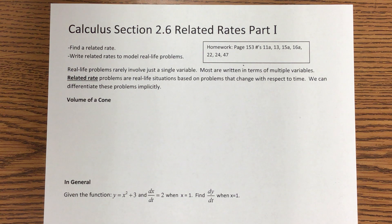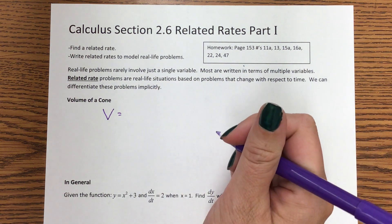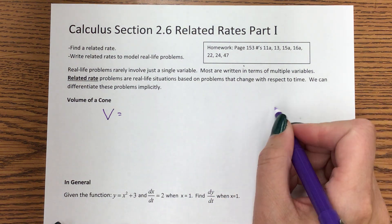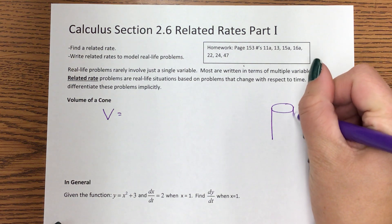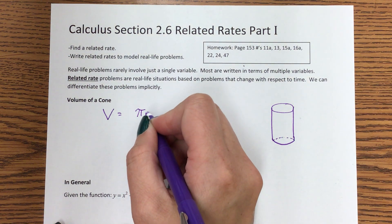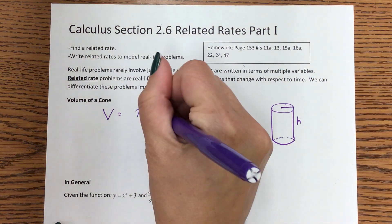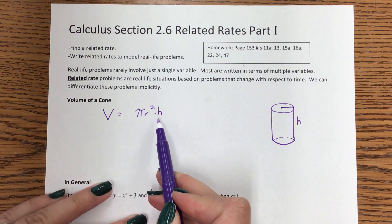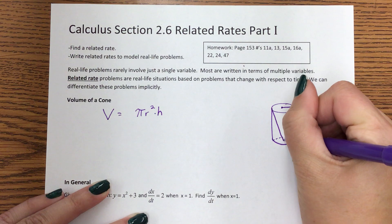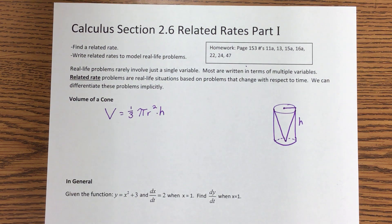You're going to end up using a lot of different equations from geometry. Let's start with the volume of a cone. The base of a cylinder is a circle, so the area is pi r squared, multiplied by the height — that's volume of a cylinder. The volume of a cone is exactly one-third of the volume of a cylinder, so V equals one-third pi r squared times h.